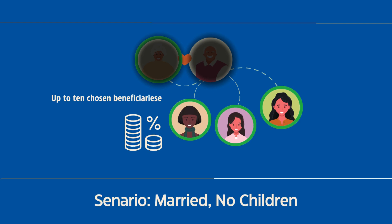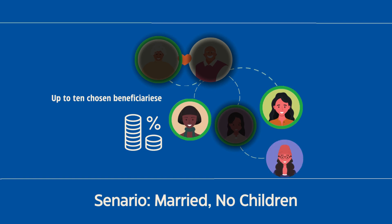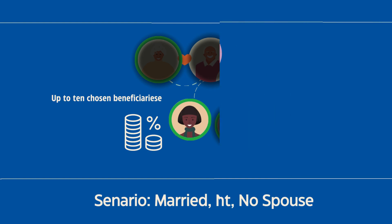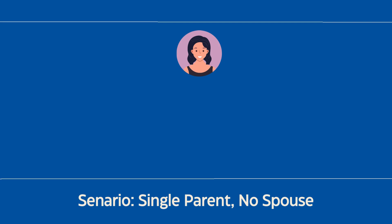You can specify the percentage each person receives. If any of your chosen beneficiaries pass away, their share can either go to their children or be divided among your other beneficiaries, based on your preference. Now, let's consider a scenario where you have children, but no spouse or person you plan to marry, or you are separated from your spouse.